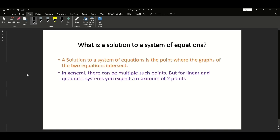The solution to a system of equations is the point where the graphs of the two equations intersect. In general, there can be multiple such points, but for this question, which is linear and quadratic systems, you can expect a maximum of two points.